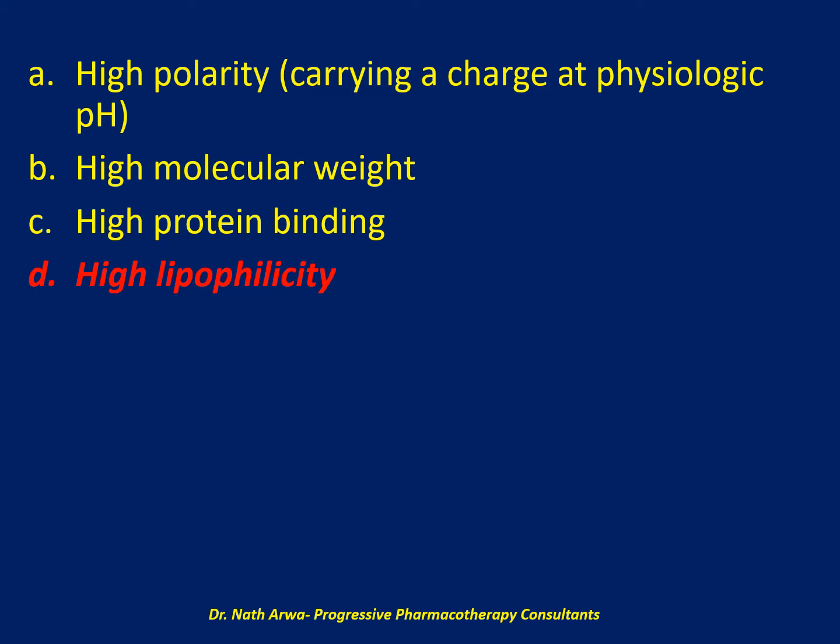D is the correct answer — high lipophilicity. High lipophilicity, low protein binding, low molecular weight, and low polarity are the pharmacokinetic parameters that predict good penetration across the blood-brain barrier. Of those listed, D is the correct response, so answers A to C are all wrong. Let's move to the next question.